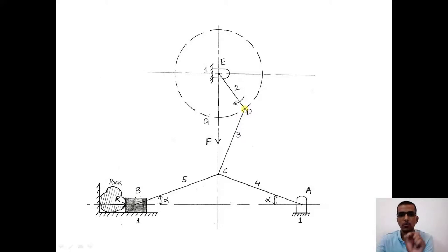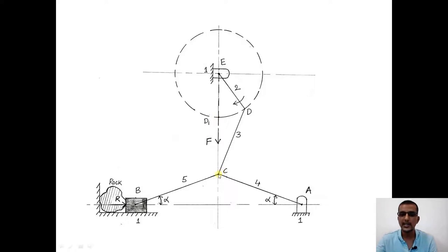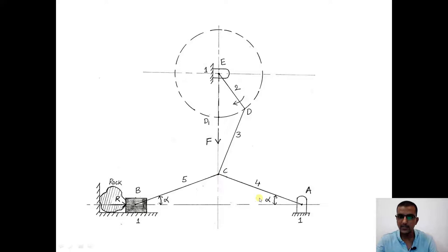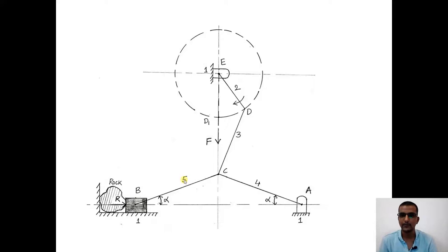When the crank moves from point D to point D1 — about 60 degrees — point C begins to move downwards and the angle alpha keeps decreasing. As D moves closer to D1, point C keeps going downward and alpha keeps decreasing. Links four and five tend to become collinear, trying to form a straight line. That is where the application of the toggle mechanism comes into play.